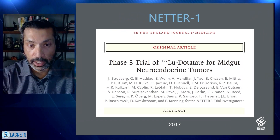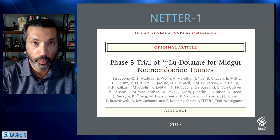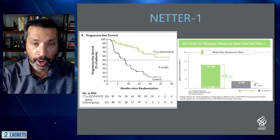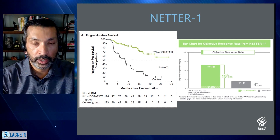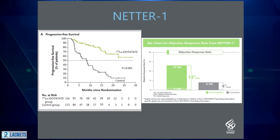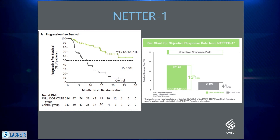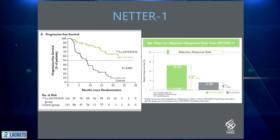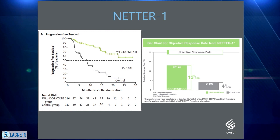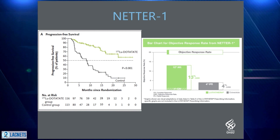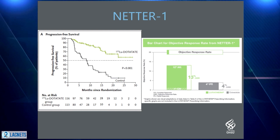The primary phase 3 study that led to the approval of Lutathera was the NETTER-1 study, published in 2017. The primary endpoint was progression-free survival, shown on the left, and you can see it was dramatically in favor of lutetium-177 dotatate over the control arm of high-dose octreotide. The right side shows tumor shrinkage — PRRT was statistically more effective, though only 13% of patients actually experienced that. The vast majority experienced tumor control, preventing the tumors from continuing to grow rather than causing shrinkage.